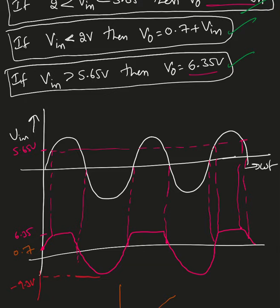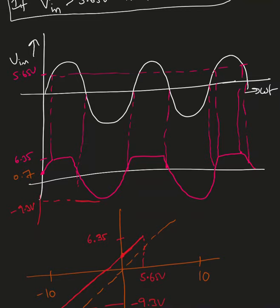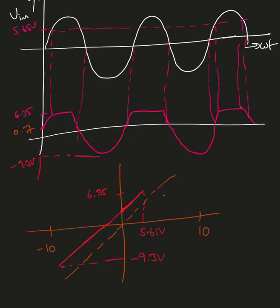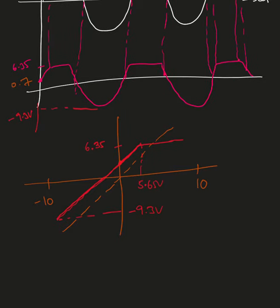For inputs less than 2 volts — including negative values like minus 1, minus 2, down to minus 10 — the output is 0.7 plus V_n. So at V_n = negative 10, V_out = negative 9.3V. The output is then constant beyond the clipping point. This red line represents the transfer characteristics. I'll end this video here; if possible I'll continue with more examples.